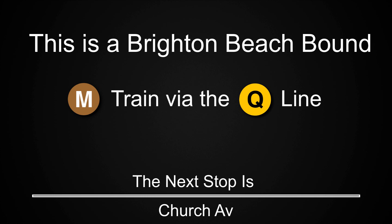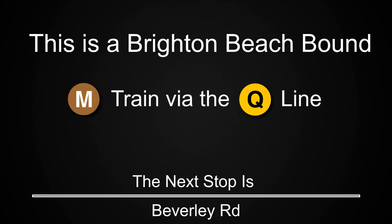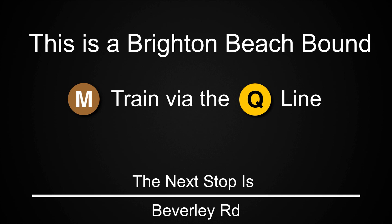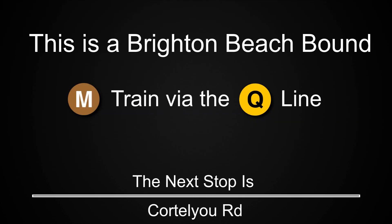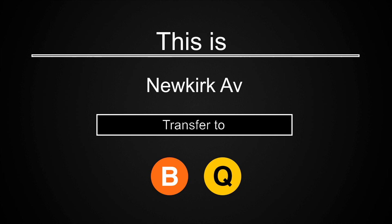This is a Brighton Beach-bound M train via the Q line. The next stop is Church Avenue. This is Church Avenue. Transfer is available to the B and Q trains. This is a Brighton Beach-bound M train via the Q line. The next stop is Beverly Road. This is a Brighton Beach-bound M train via the Q line. The next stop is Cortelyou Road. This is a Brighton Beach-bound M train via the Q line. The next stop is Newkirk Avenue. This is Newkirk Avenue. Transfer is available to the B and Q trains.